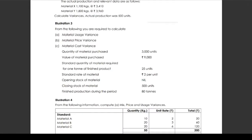From the following you are required to calculate material usage variance, material price variance, and material cost variance. The quantity of material purchased is 3000 units, value of material purchased is 9000 rupees. Standard quantity of material required for 1 ton of finished product is 25 units, standard rate of material is 2 rupees per unit. Opening stock of material is nil, closing stock of material is 500 units, and finished production during the period is 18 tons.